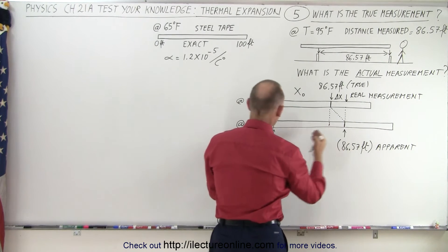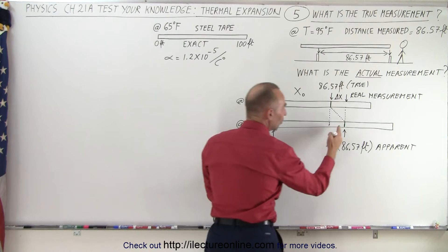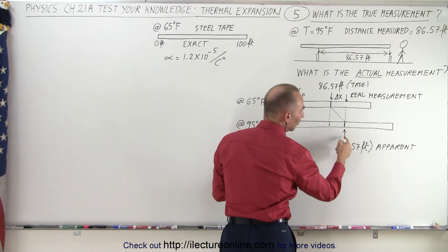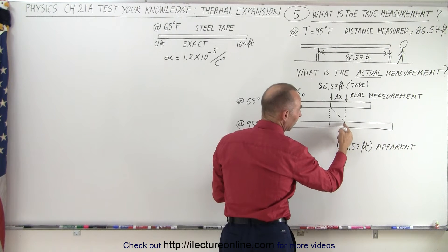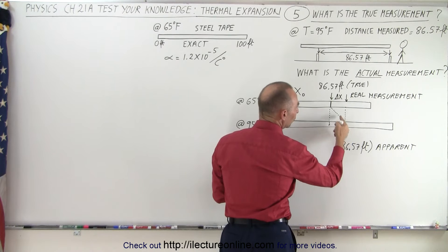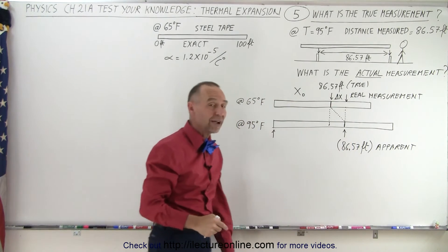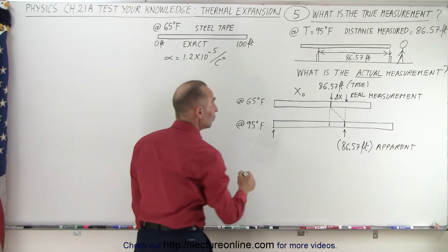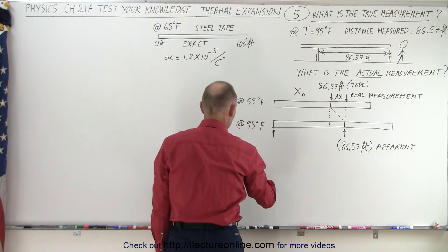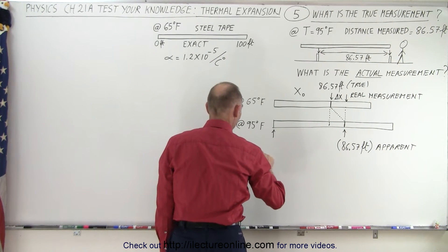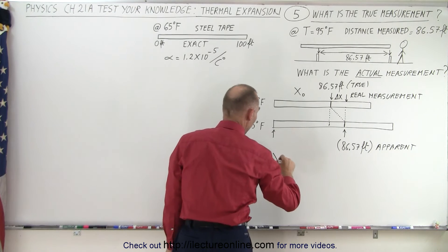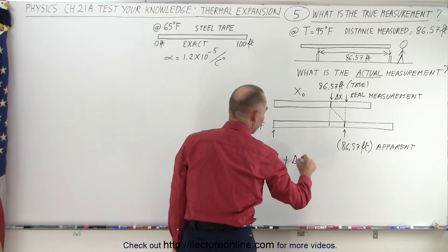The measurement we get when the tape is at 95 degrees will make us think this is 86.57 feet, but actually that point will be over here when the tape is at 65 degrees. So ultimately, the true x equals x sub naught plus delta x.